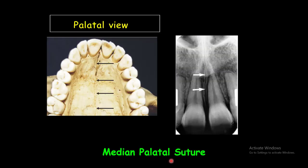The median palatine suture, also called the intermaxillary suture, is formed by the palatine processes that articulate in the midline. On intraoral periapical radiography, this suture appears as a thin radiolucent line in the midline, extending from the alveolar crest between the central incisors and continuing posteriorly. This suture is limited by two radiopaque borders of thin cortical bone on each side. Evaluation of the intermaxillary suture is important in planning for orthodontic expansion of the palate.